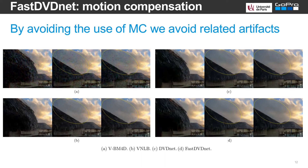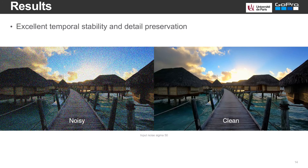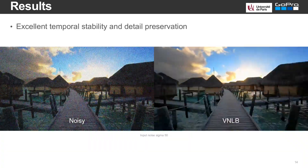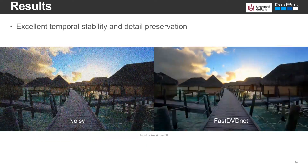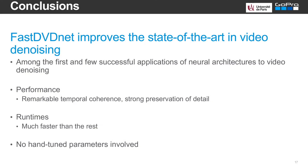By avoiding the estimation of the optical flow, we not only improve the running times, but we also avoid artifacts related to errors in motion compensation. In terms of objective performance, FastDVDNet outperforms other state-of-the-art approaches on different datasets and with different metrics. Our method yields results with excellent quality and great temporal stability. In terms of running times, our approach runs orders of magnitude faster than other competitors. With excellent quality and fast running times, FastDVDNet improves the state-of-the-art in video denoising.